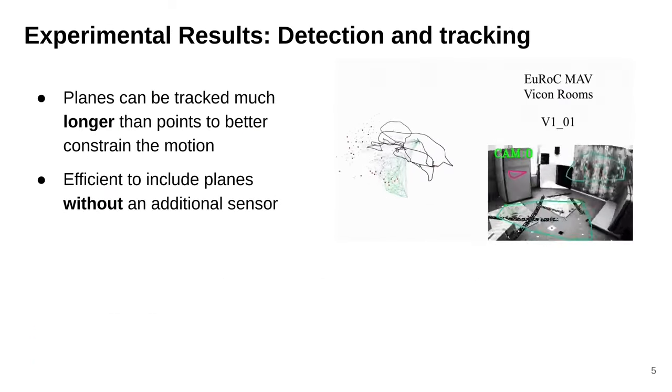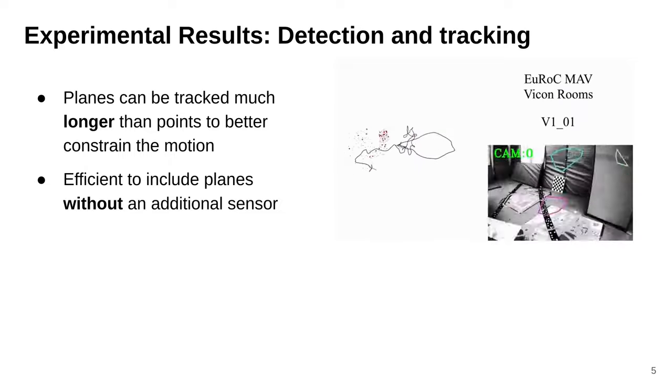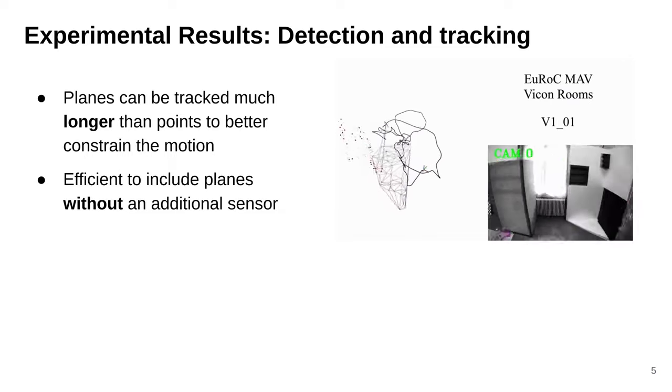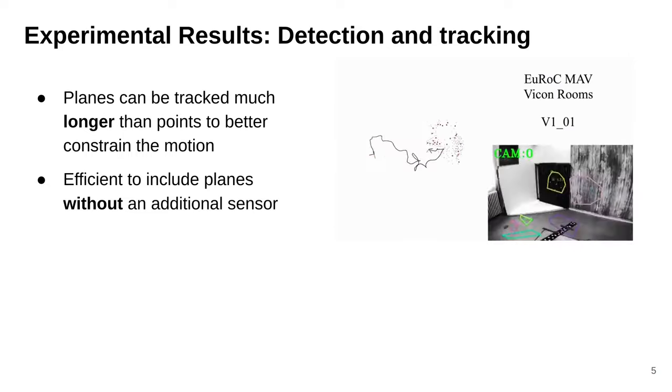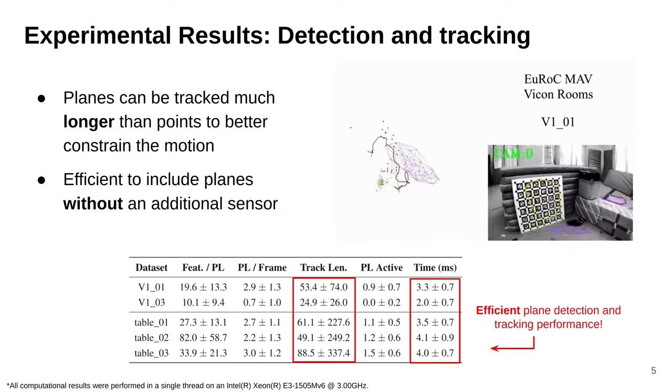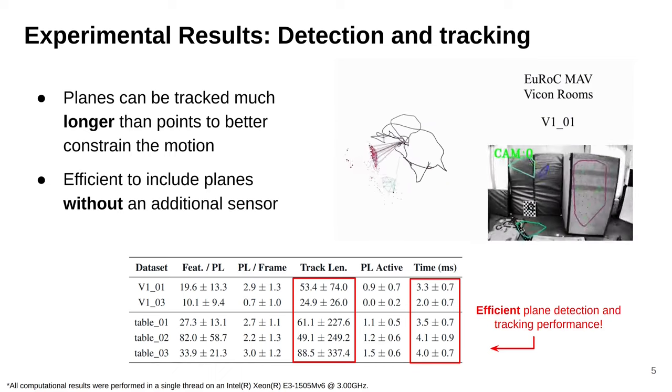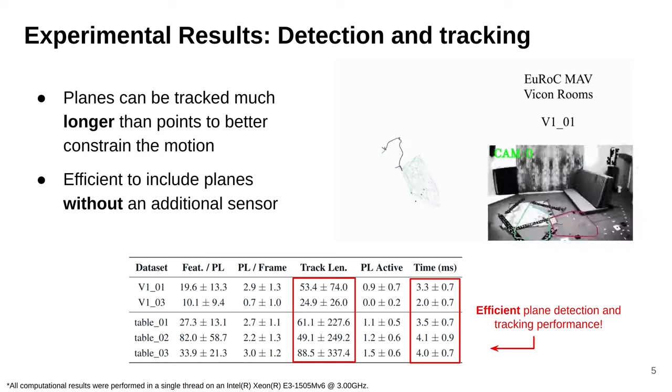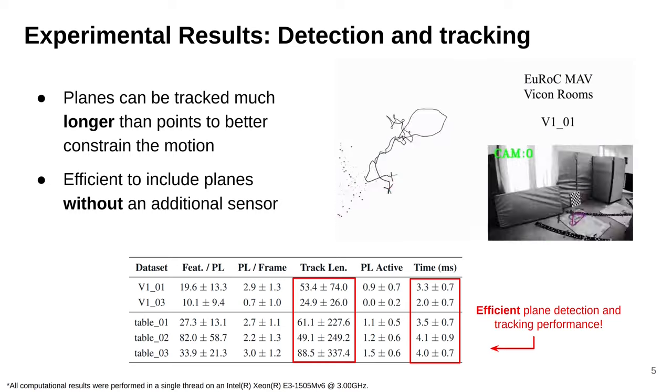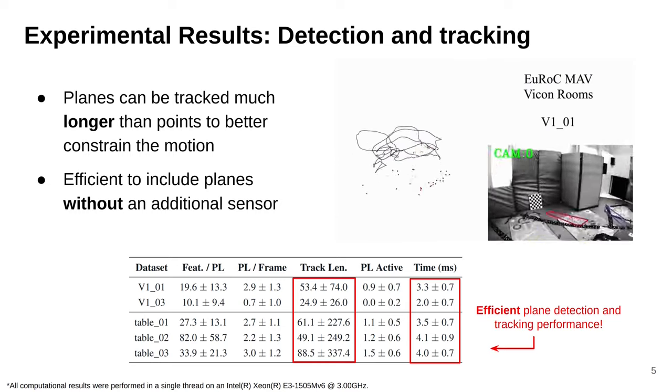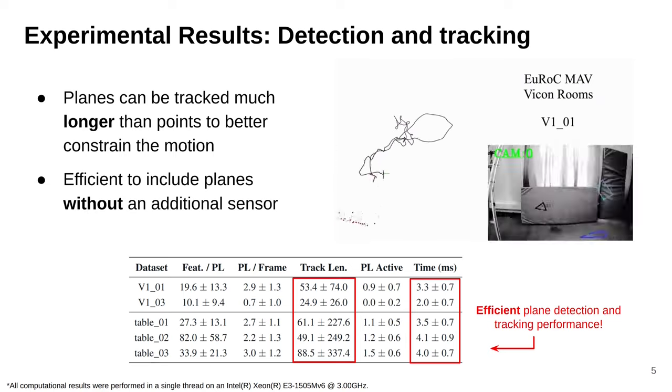We have conducted a comprehensive evaluation of our plane detection and tracking algorithm. As demonstrated in the video, while point features can easily lose track, our algorithm is able to track planes for longer periods of time. We conducted statistical analysis for the tracking algorithm. We show selected results, including the average number of point features per plane, the tracked planes per frame, the average track length for plane features, and active planes in the state. Our analysis shows that plane features have a large number of point features on them and can be tracked for a long time.